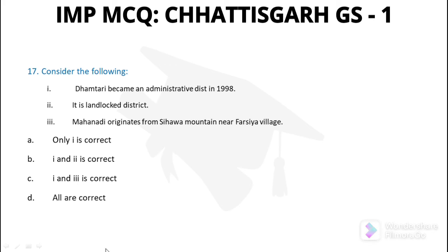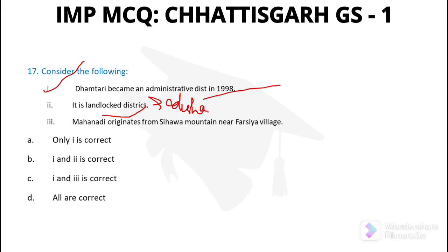Question number 17: Dhamtari became an administrative district in 1998. It touches Odisha's boundary — it is not a landlocked district. Mahanadi originates from Shihawa Mountain. So statements 1 and 3 are correct — option C.